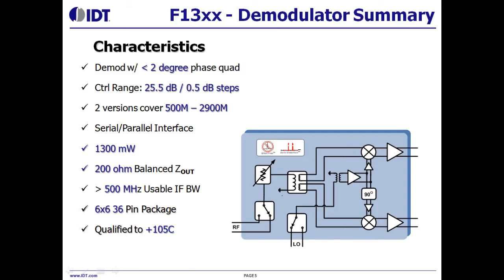The IDT-F30 series DPD demodulator integrates all these DPD receiver functions into a single chip. It includes an integrated IQ demodulator, ADC driver with IF splitter, two switches, a digital RF step attenuator, and SPI control — everything contained in a single chip.